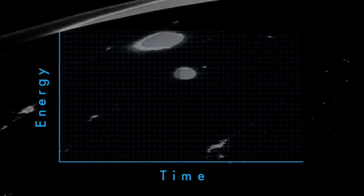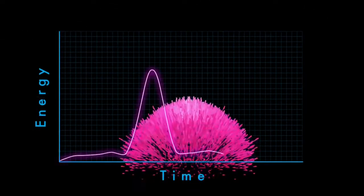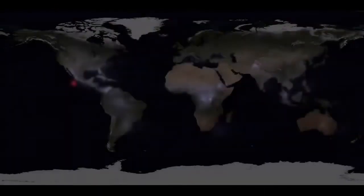The process starts with a terrestrial gamma ray flash, or TGF, an intense pulse of gamma rays originating from thunderstorms.